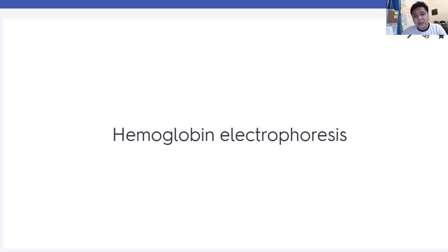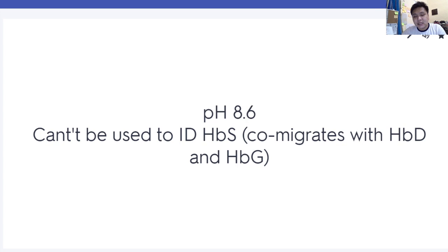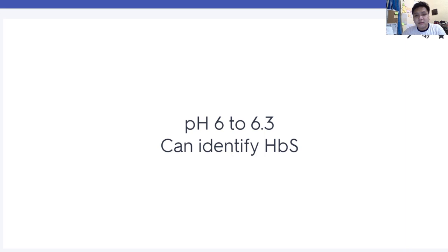Hemoglobin electrophoresis is used to identify abnormal hemoglobin. Cellulose acetate hemoglobin electrophoresis uses pH 8.6, and this cannot be used to identify hemoglobin S since hemoglobin S co-migrates with hemoglobin D and hemoglobin G in this method. Nitrate agar hemoglobin electrophoresis uses pH 6 to 6.3 and can identify hemoglobin S.